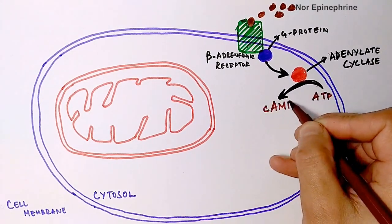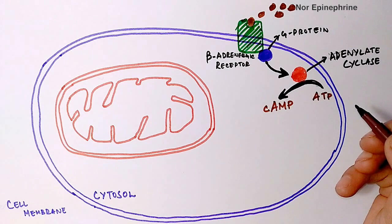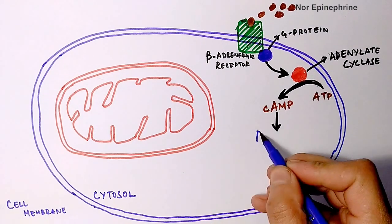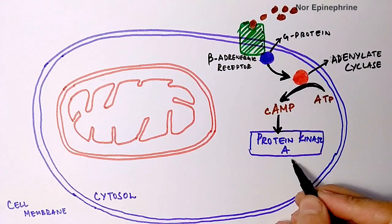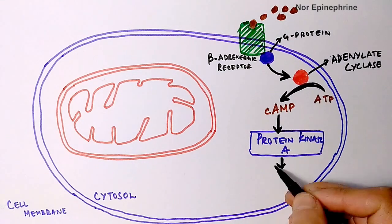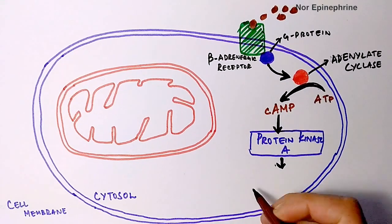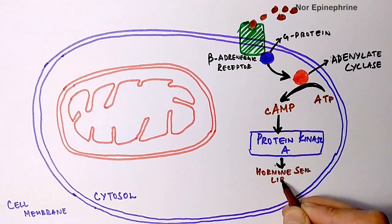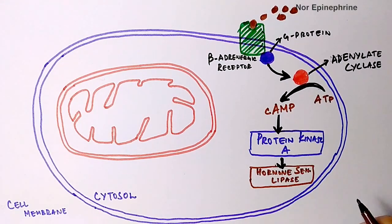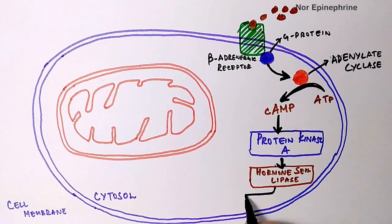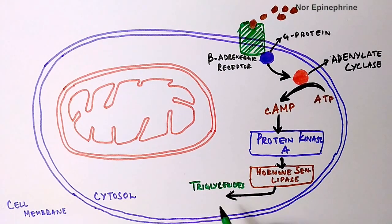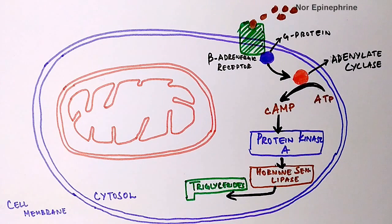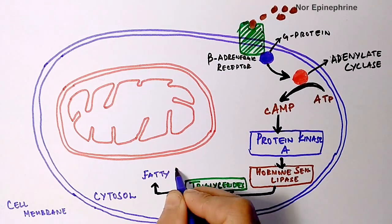The G protein activates adenylyl cyclase, which converts ATP to cyclic AMP. Cyclic AMP then activates protein kinase A, which in turn activates hormone-sensitive lipase. This hormone-sensitive lipase converts triglycerides to fatty acids, and these fatty acids can then be transported to the mitochondria.